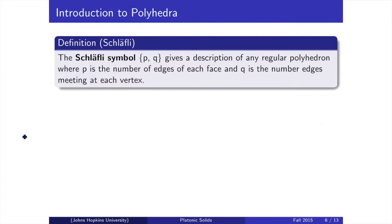The Schläfli symbol is a special way of classifying regular polyhedra. It consists of two numbers, P and Q. P tells us the number of sides on each polygon face. For example, if P equals 3, we know that the faces are equilateral triangles.